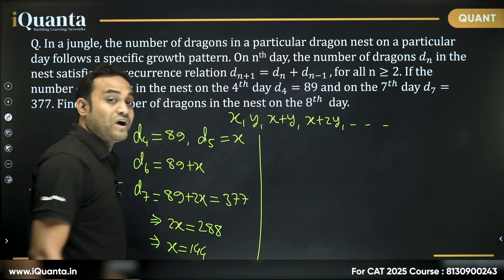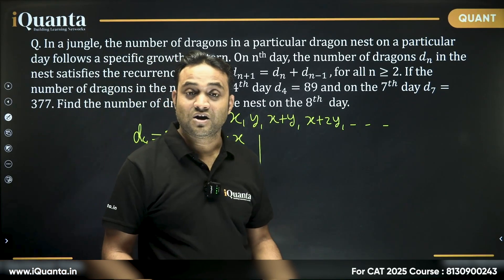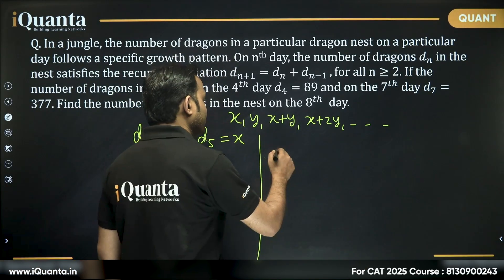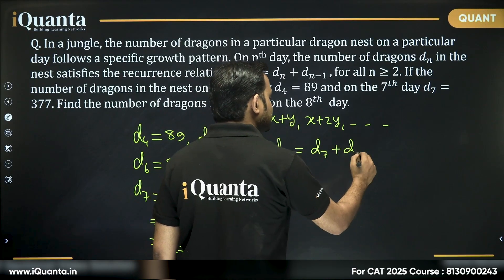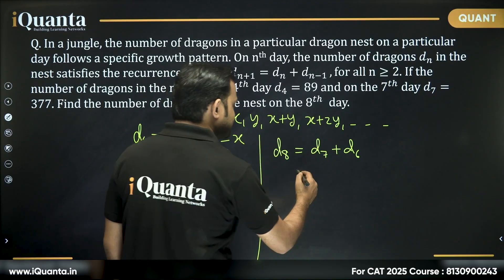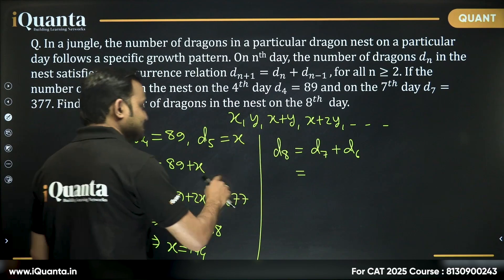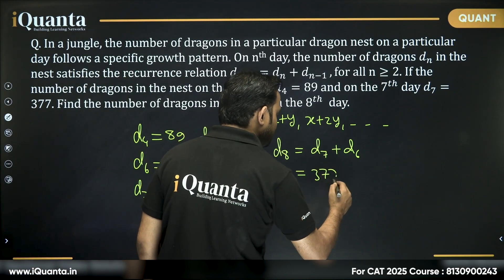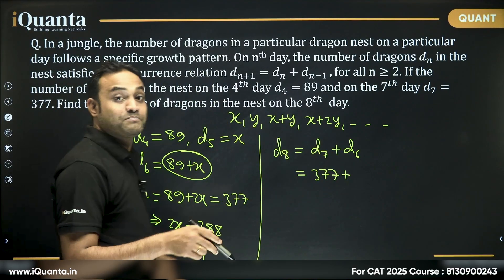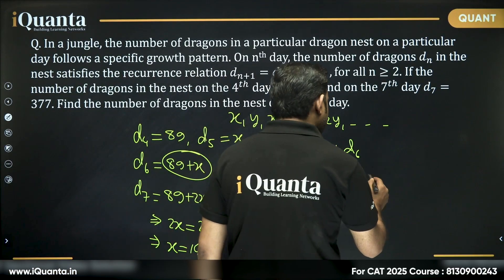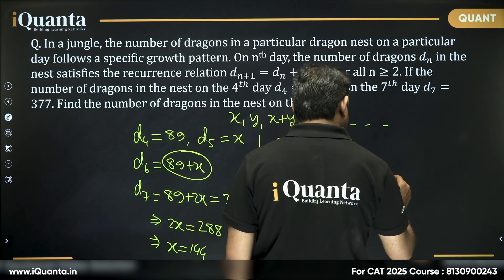Now, if I want to find the number of dragons on eighth day, we need to find d8, which will be equal to d7 plus d6. On d7, number of dragons is 377. On d6, number of dragons is 89 plus x. So, 89 and what is x? x is 144.